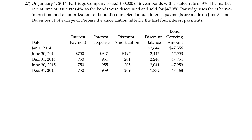We've got semi-annual interest payments. The interest payment is always the same, and that is based on the stated rate of the bond. Since these are semi-annual payments, we're going to use one and a half percent — not 3%. I always write the interest rate right above my table so I don't get confused. One and a half percent times the face value is the interest payment. That's how we get $750.